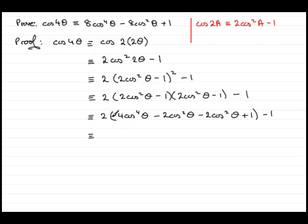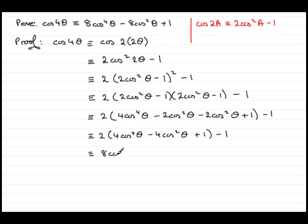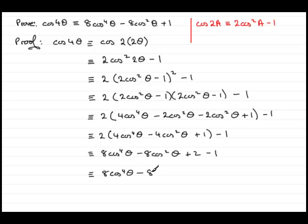Tidying up inside the bracket: we've got 4 cos to the power 4 theta, and grouping the two middle terms gives minus 4 cos squared theta, then plus 1. Expanding the bracket: 2 times 4 cos to the 4 theta is 8 cos to the 4 theta; 2 times minus 4 cos squared theta is minus 8 cos squared theta; 2 times 1 is 2, then minus 1 on the end — giving us plus 1. We've got the answer we were asked to prove: 8 cos to the power 4 theta minus 8 cos squared theta plus 1.